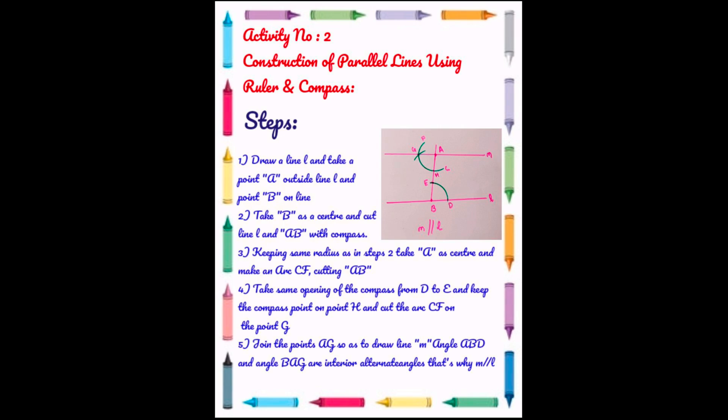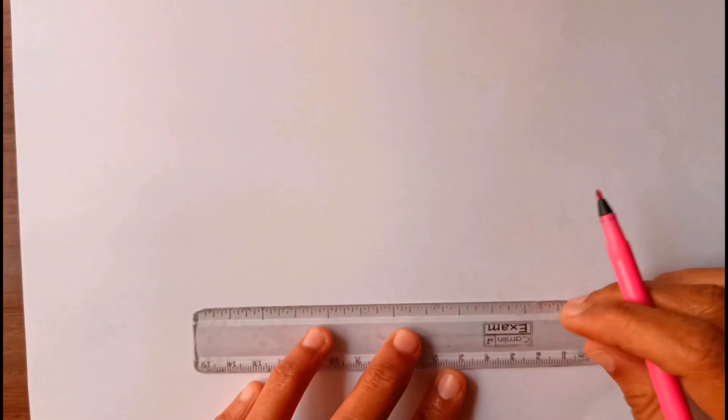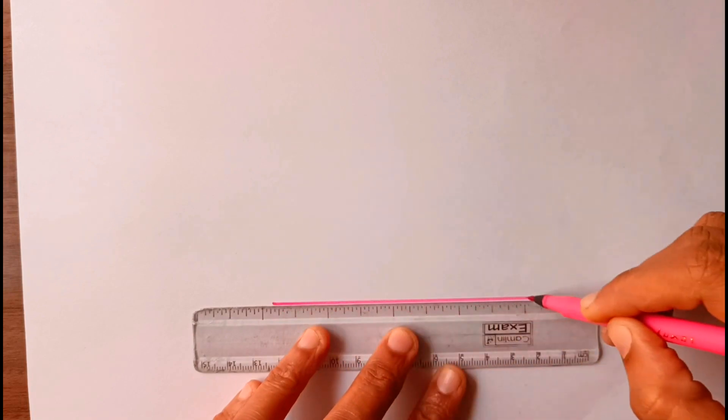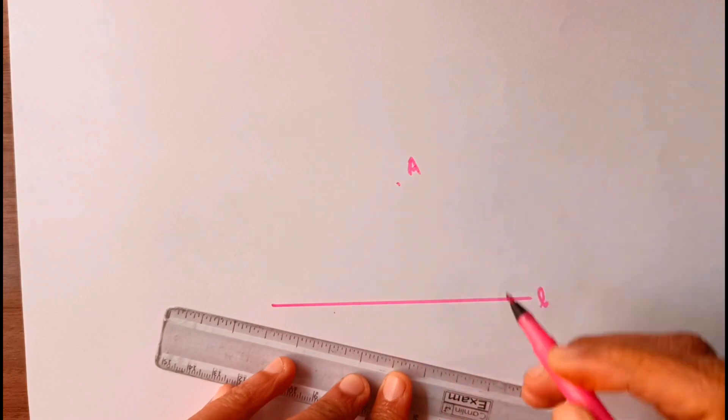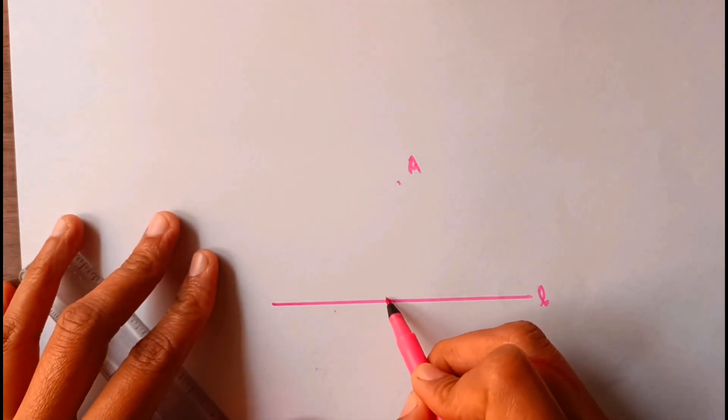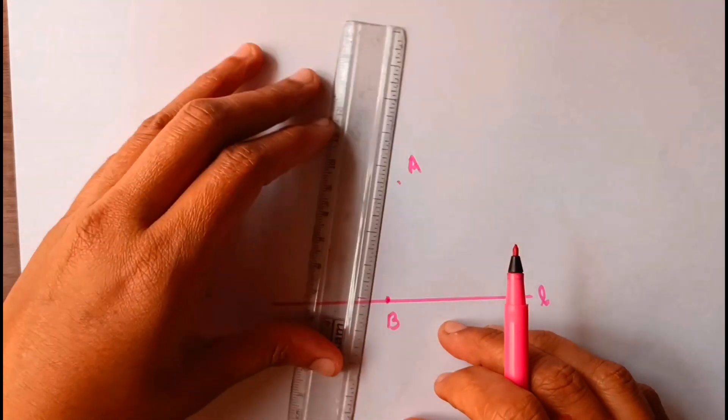Draw a line L, take any point A, take any point B on L. Join the two points. Taking B as a center, make an arc on line L and AB.